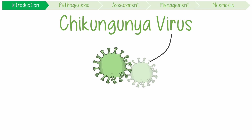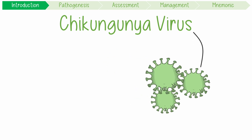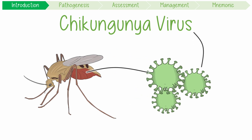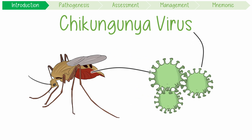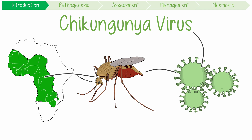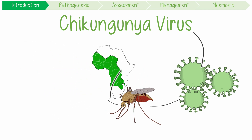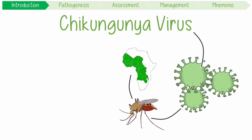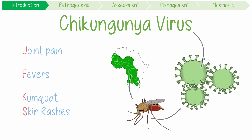Chikungunya virus is transmitted by Aedes mosquitoes, mostly in West Africa. It causes a couple of key clinical features you can remember as JFK's signs and symptoms: joint pain, fevers, and kumquat skin rashes.